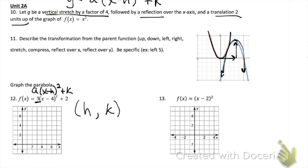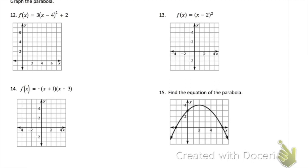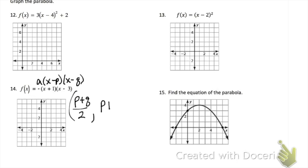Problem 13 is just like problem 12. Problem 14 is in intercept form now — our vertex is found using P and Q. Recall, it's x minus P and x minus Q. Our vertex x-coordinate is P plus Q divided by 2. The y-coordinate is found by plugging that x back into the original equation. To get your other points, just make a table: put your vertex in the middle, do a point above and a point below, and plug them in to get the Y values.